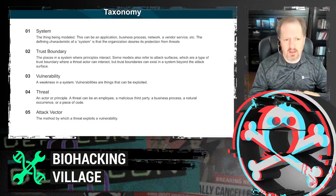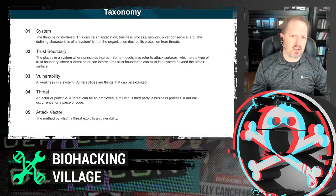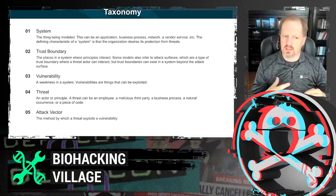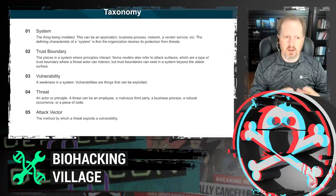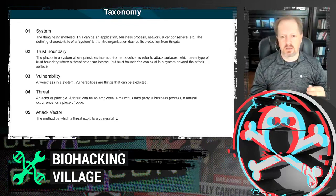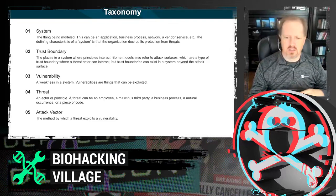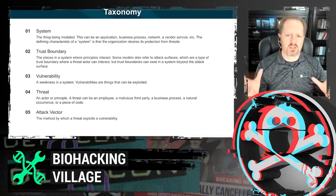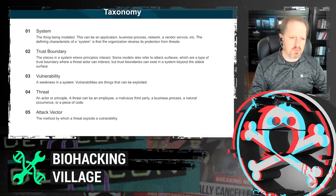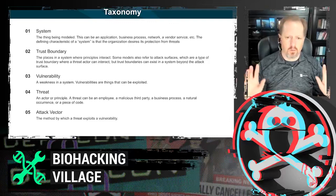First thing is a system — anything you want to model. Lots of threat modeling focuses on applications and software, but a system can also be a business process, a network, or a vendor. The defining characteristic is that we want to protect it from specific threats. We just completed our annual risk assessment where we modeled 26 business processes end to end. Systems typically have defined borders — you know what the entry point is, you know what the exit is, and you can then model it for threats.